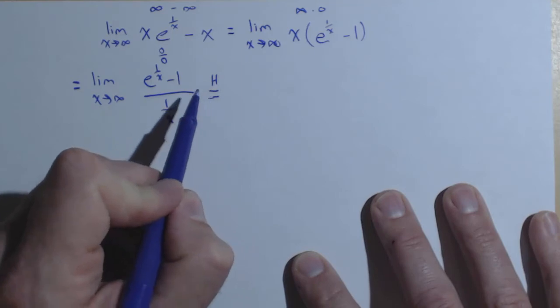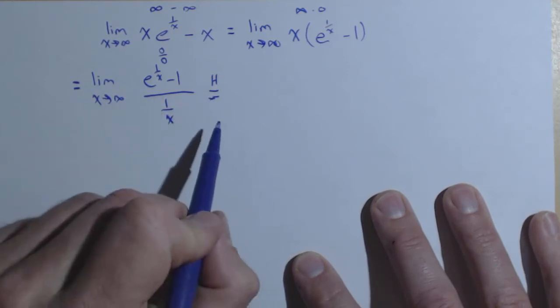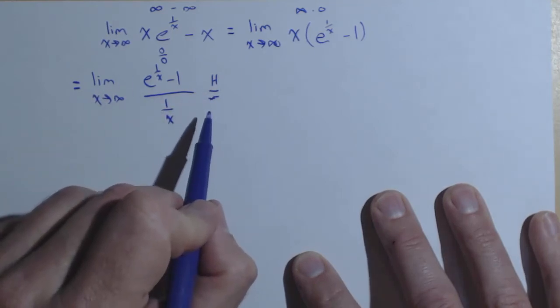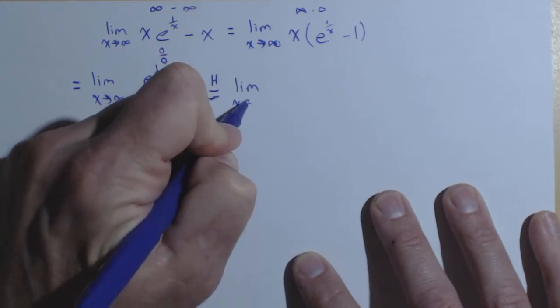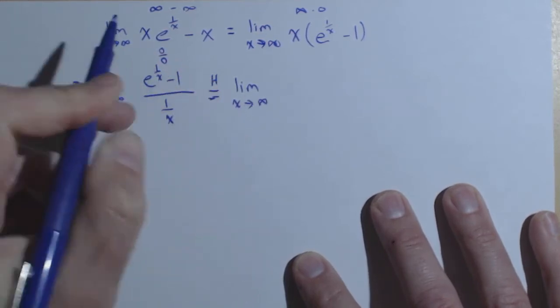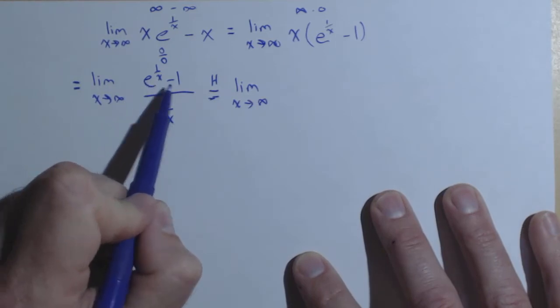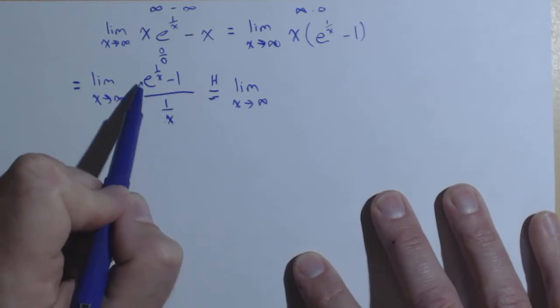I like to put an h over the equal sign, just letting myself and the reader know that that's what I'm doing to get to my next step. So my next step, I'm going to apply L'Hopital's rule and recalculate my limit if I can. So we're going to take the derivative of the numerator and denominator separately.